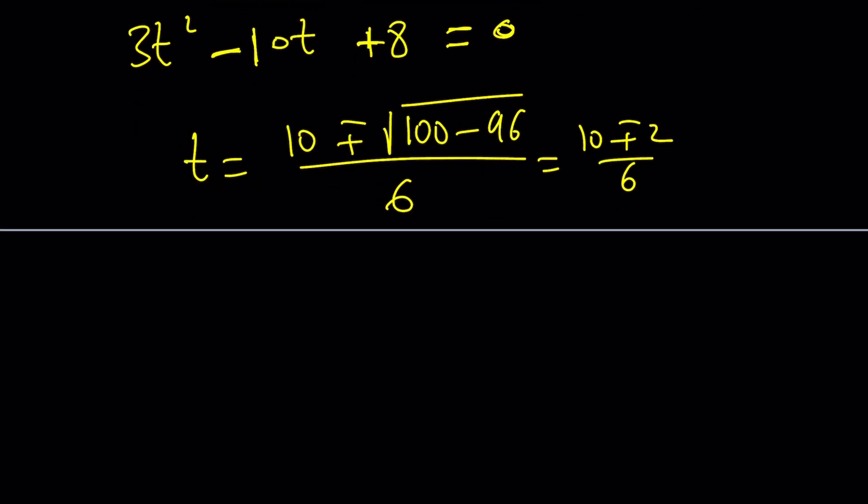By the way, you can divide everything by 2. 5 plus 1 divided by 3 or 5 minus 1 divided by 3. This is a 2. This is a 4 thirds. But remember, these are the t values.